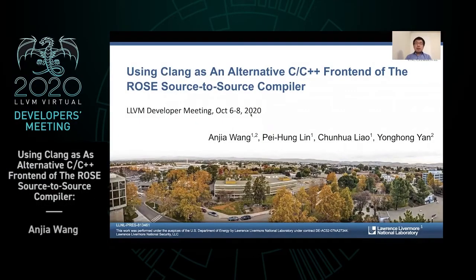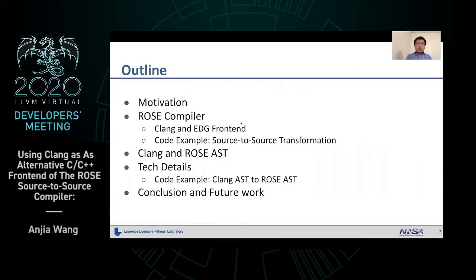Hello, everyone. My name is Anjia Wang. I come from University of North Carolina at Charlotte. Today, I will represent our work of using Clang as a frontend in Rose compiler. This work is done in Lawrence Livermore National Lab.